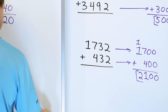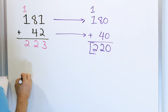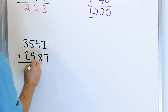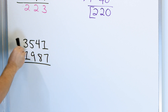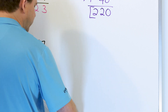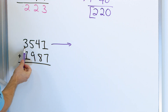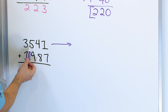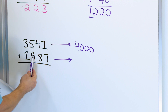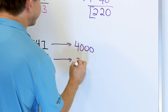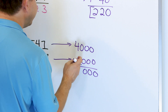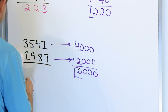I only have one more problem. Let's take a look at 3,541 plus 1,987 — estimate the addition. Both numbers have four digits, so we round both to the thousands place. For 3,541, it can go up to 4,000 or down to 3,000 — the next digit is 5 or above, so it goes up to 4,000. For 1,987, the next digit is 9, so it goes up to 2,000. Zero plus zero is zero, zero plus zero is zero, zero plus zero is zero, four plus two is six. The estimated answer is 6,000.